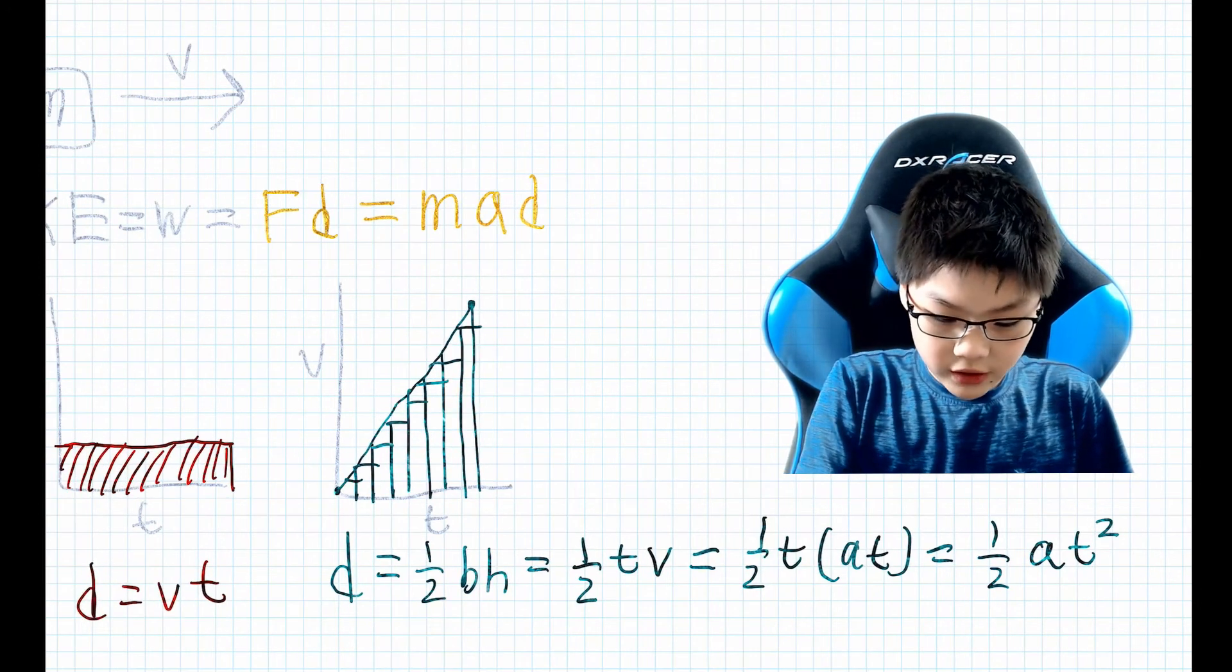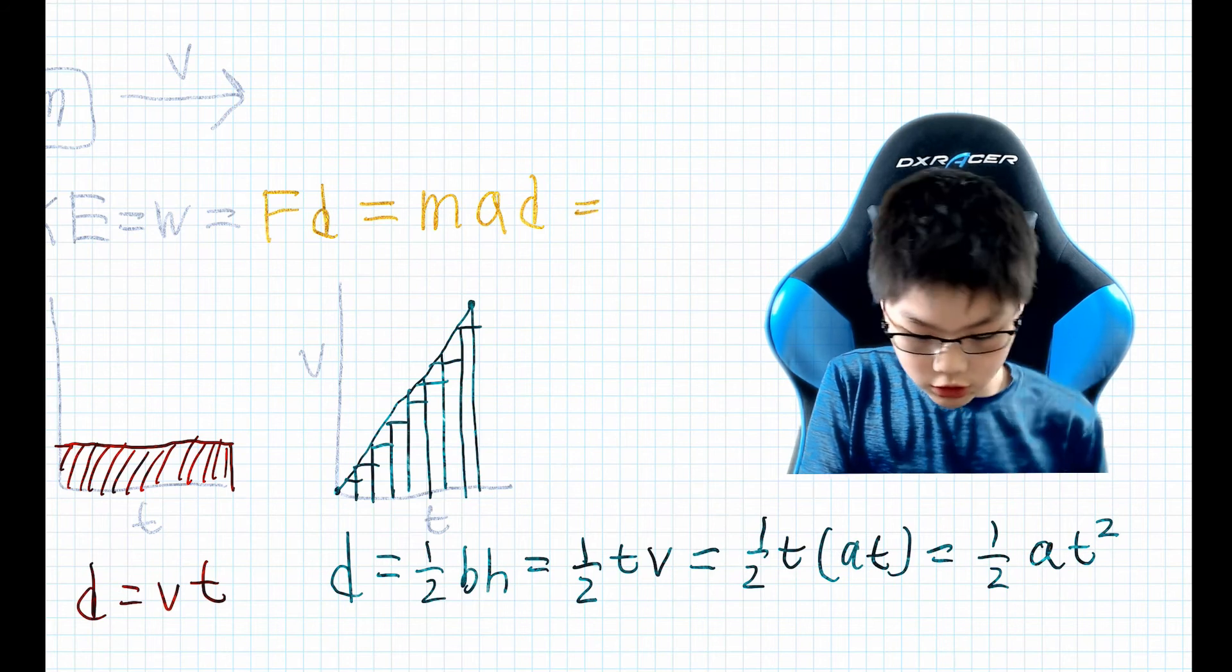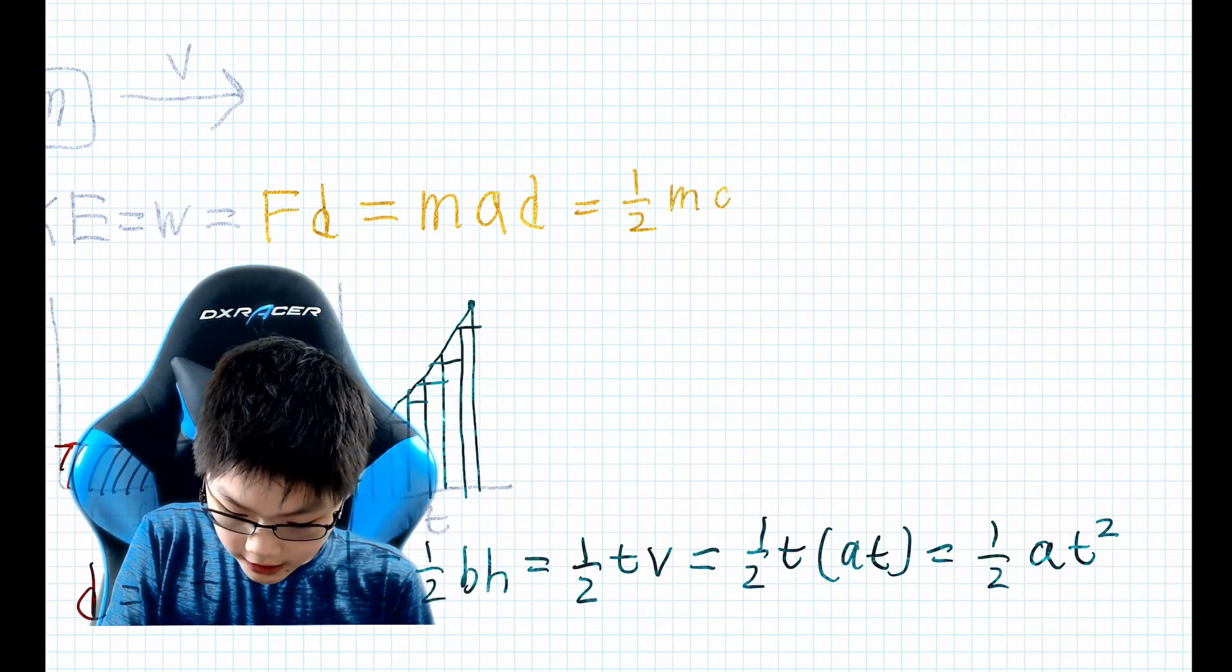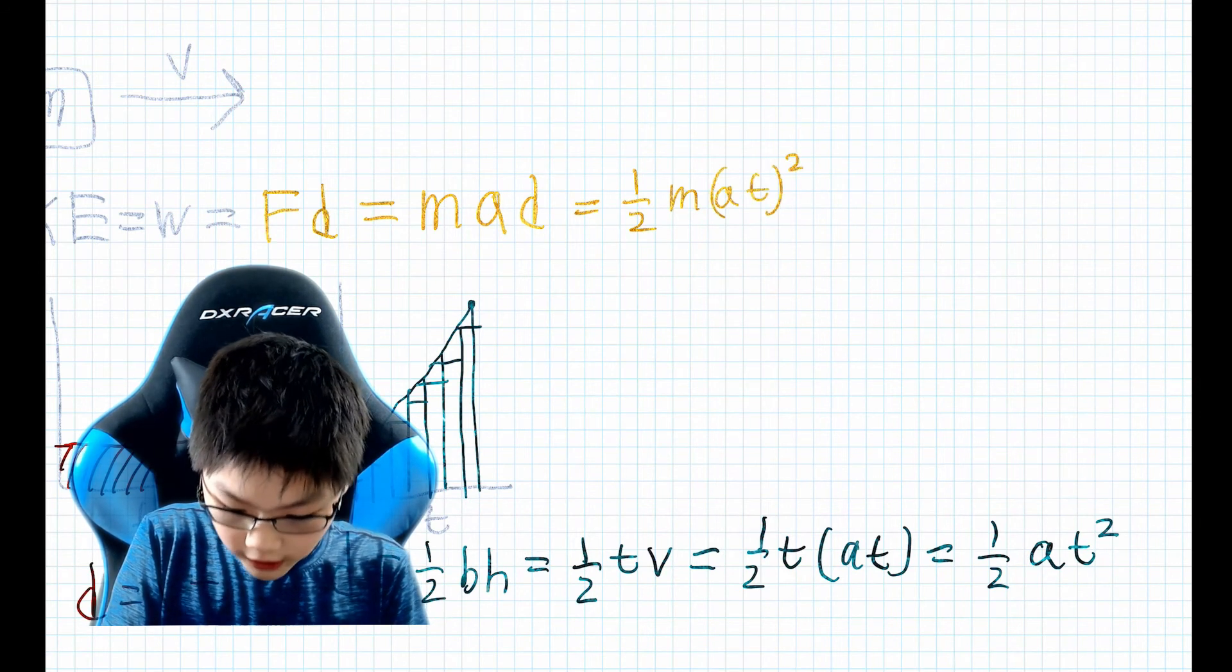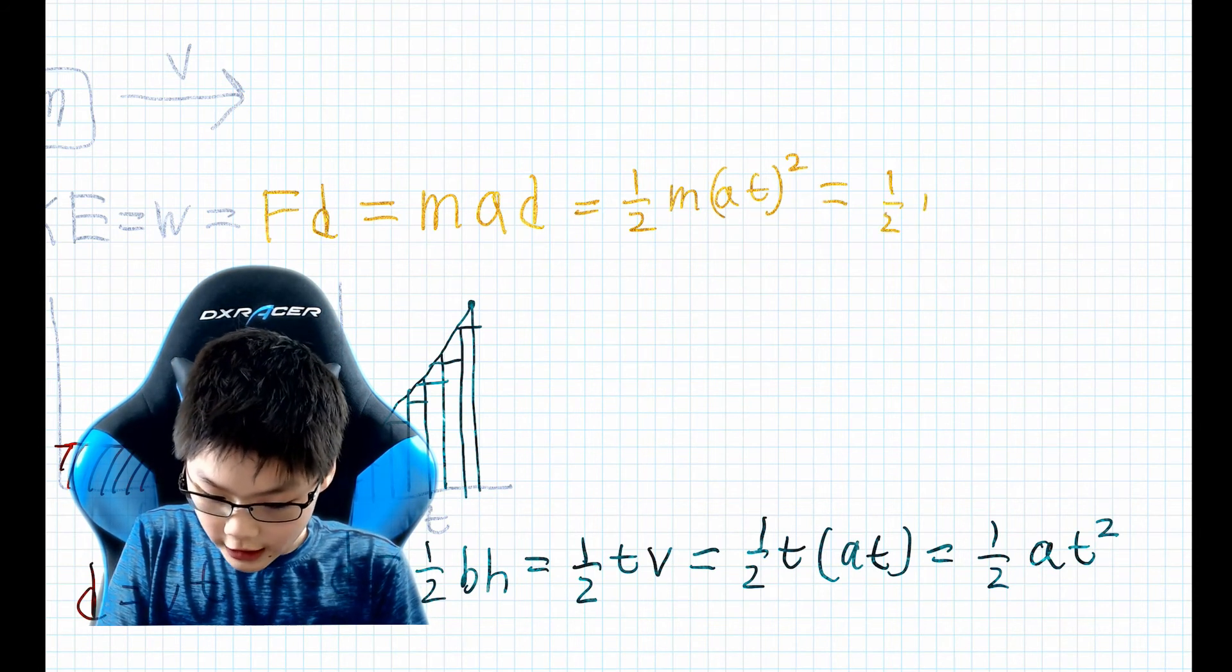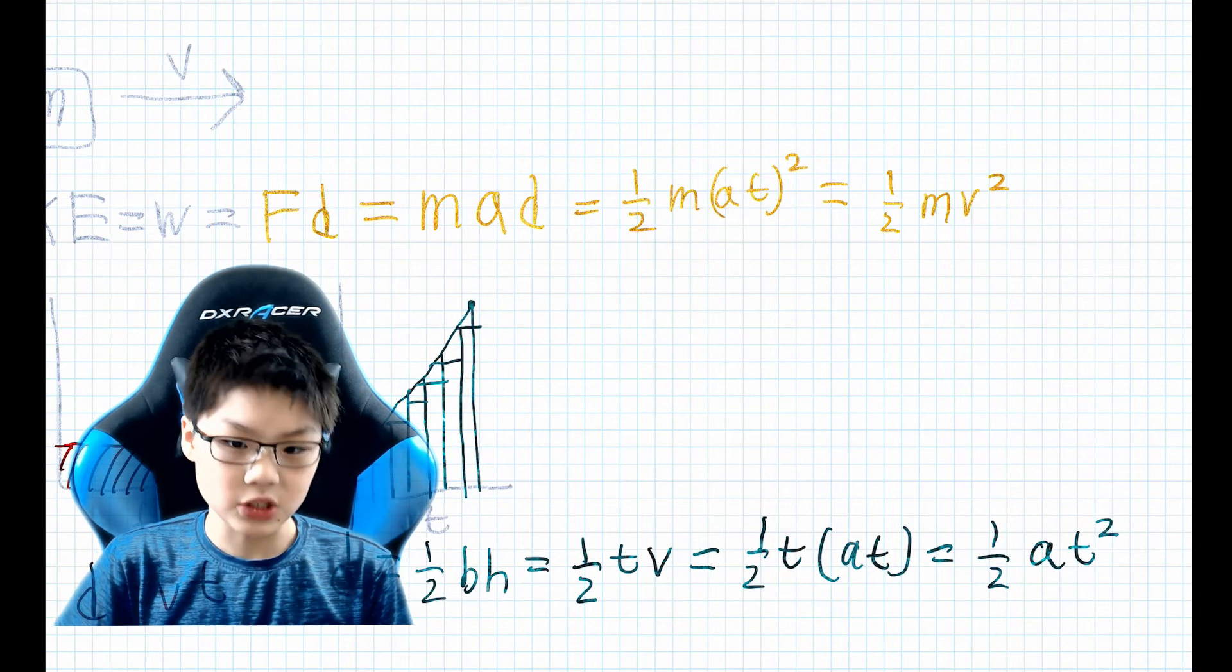Bring this back into our previous expression with the mad statement. That will be equal to one half m times at squared. And that will give us one half m v squared because the acceleration times time is going to be the velocity.